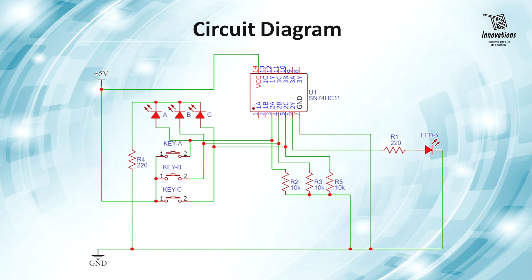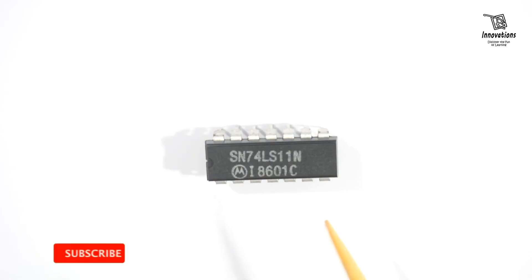Now let us have a look at the practical implementation of 3 input AND Gate. Here is the IC 74LS11 or 7411. This is a triple 3 input AND Gate. It has 3 AND Gates in it. It is a 14 pin IC, pin number 1 to pin number 7, pin number 8 to pin number 14. We will use only one segment of the AND Gate which is pin number 3, 4, 5 input and pin number 6 output.